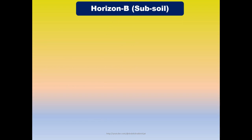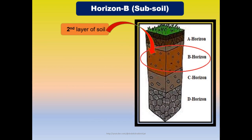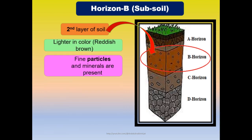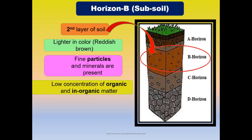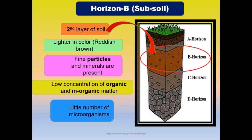Soil horizon B is also called subsoil. This is the second layer of soil. It is lighter in color. Fine particles and minerals are present. There is a low concentration of organic and inorganic matter as compared to horizon A, and only a little number of microorganisms are found.